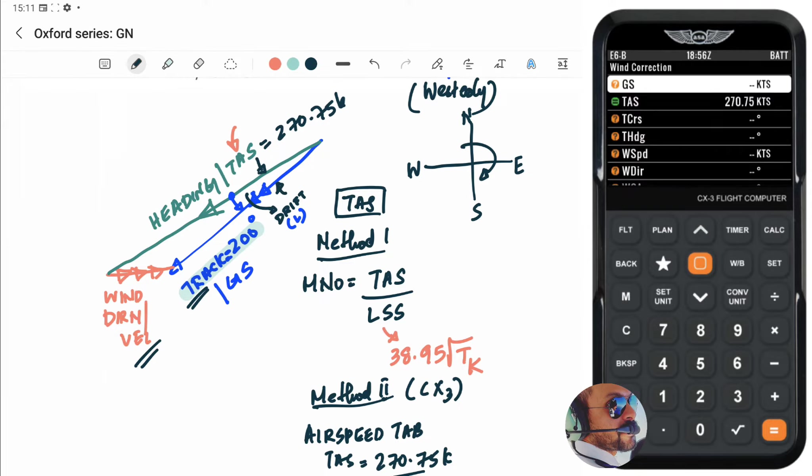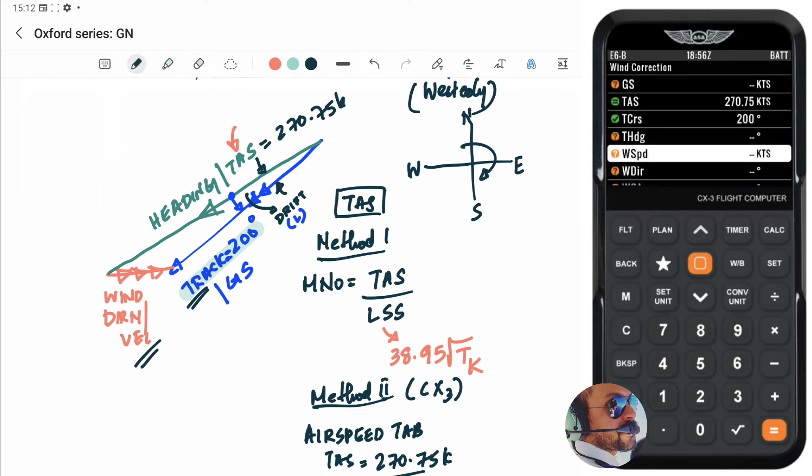Now, the good thing with CX3 is that once you navigate through and once you reach this wind correction tab, the TAS which you already found out from the airspeed tab is kind of recorded and displayed straight there, which means you don't have to jot it down or kind of memorize it and struggle to type it in. So you can see TAS is already there, 270 decimal 75 knots. Let's enter the true course, which is 200 degrees true. Heading is something which we need to find out and let's move on to wind speed and wind direction.